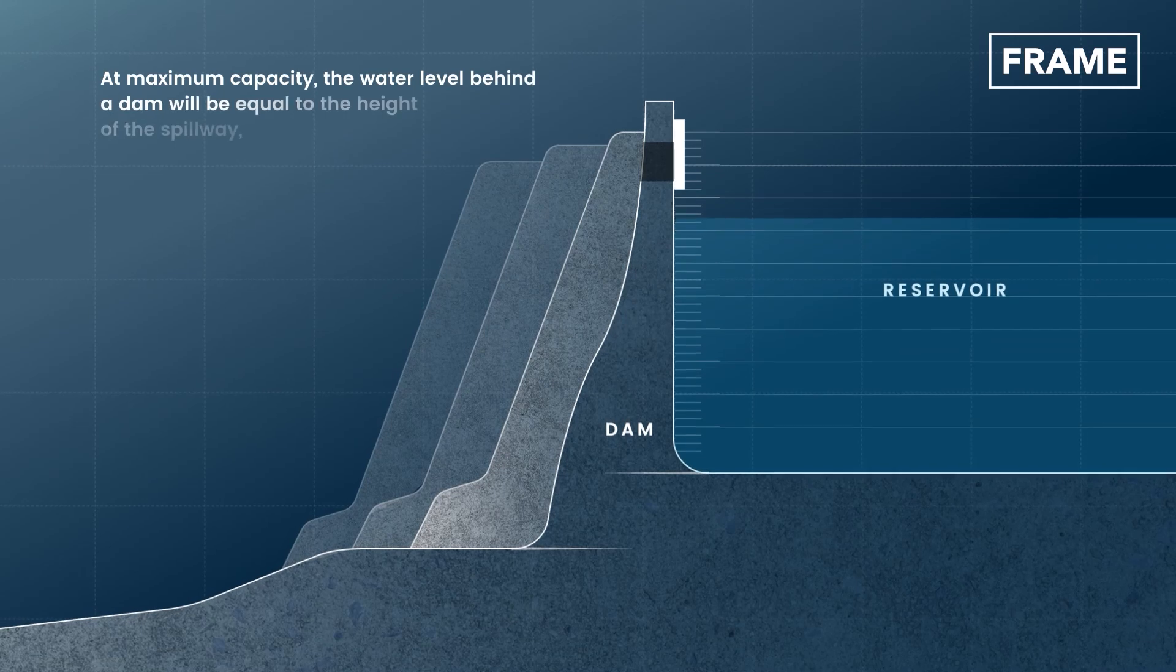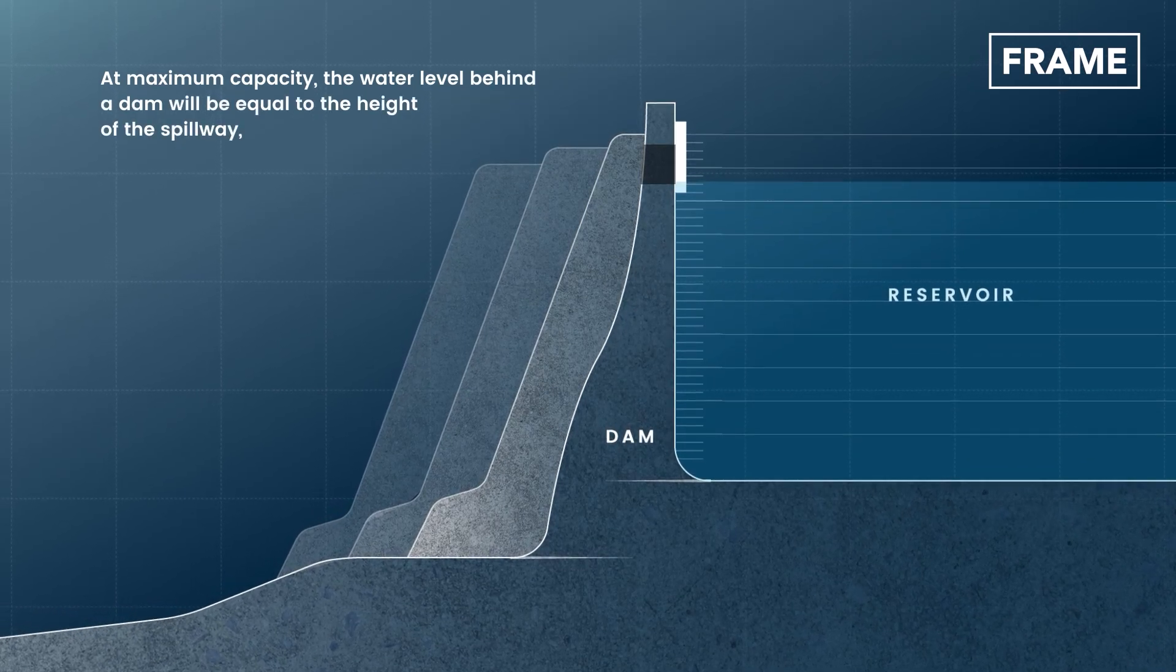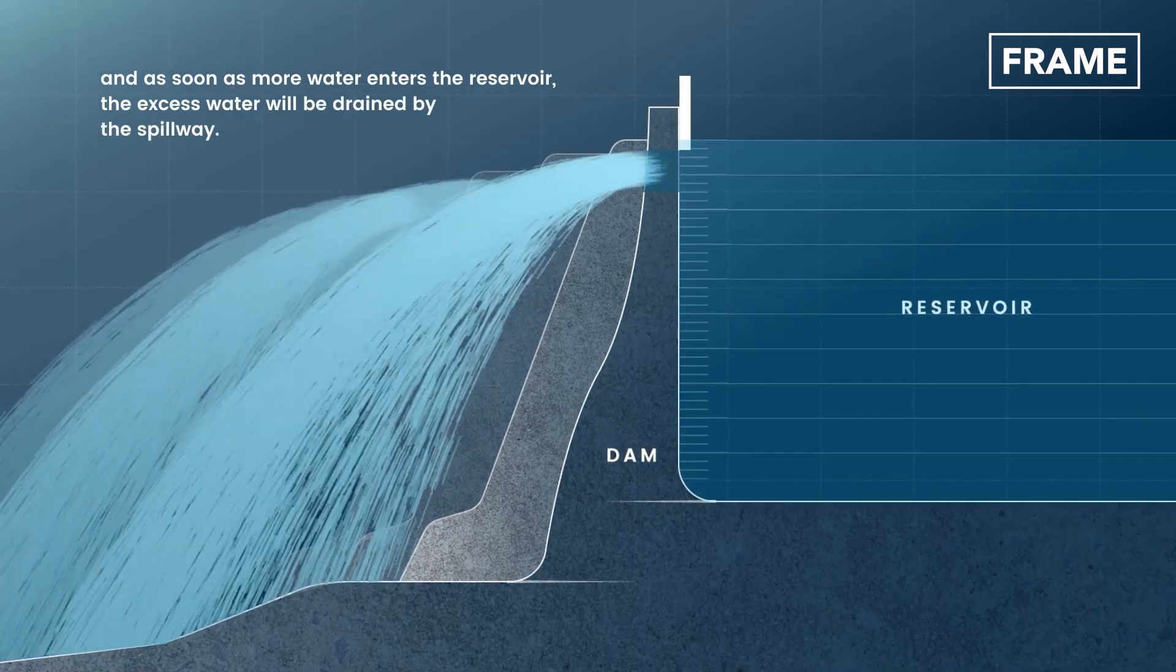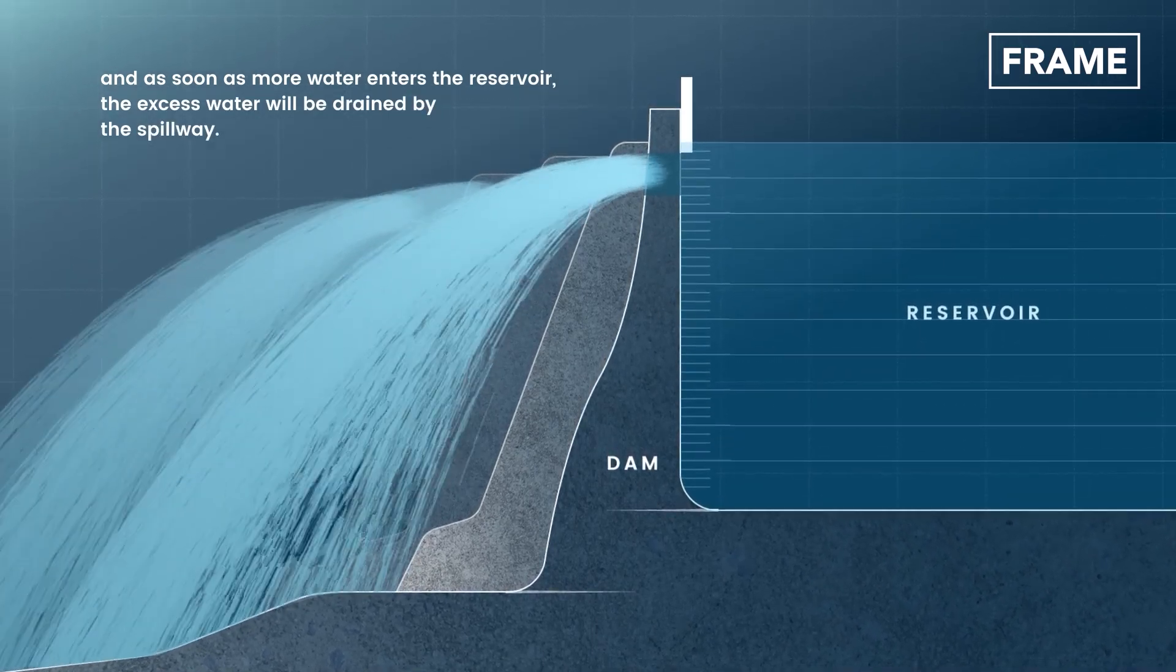At maximum capacity, the water level behind a dam will be equal to the height of the spillway. And as soon as more water enters the reservoir, the excess water will be drained by the spillway.